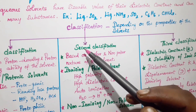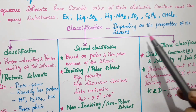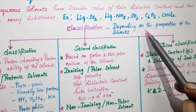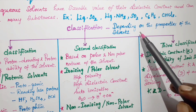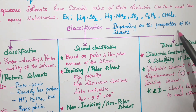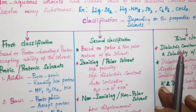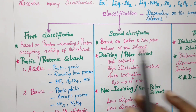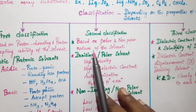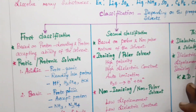The classification of non-aqueous solvents is based on the properties of the solvents. We will classify the solvents into three categories: first classification, second classification, and third classification.